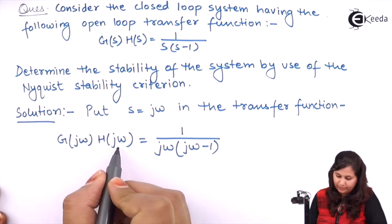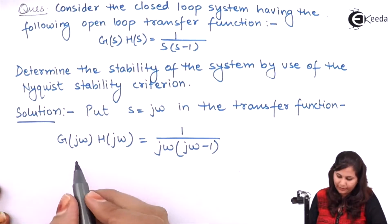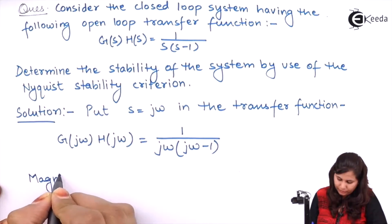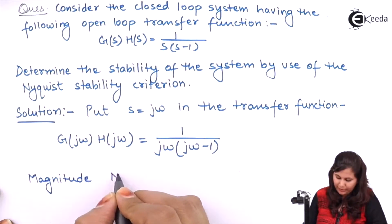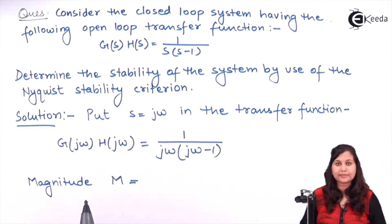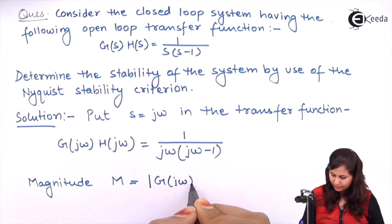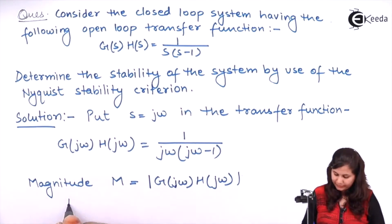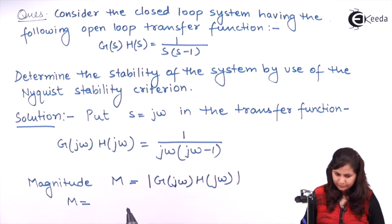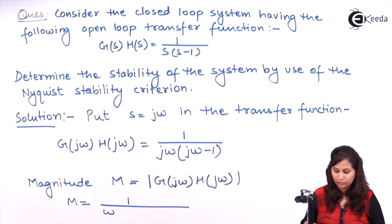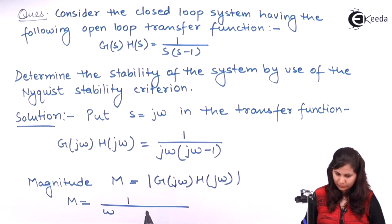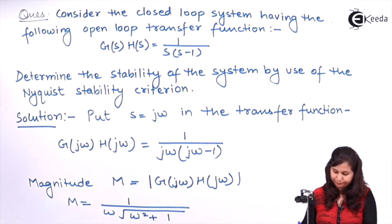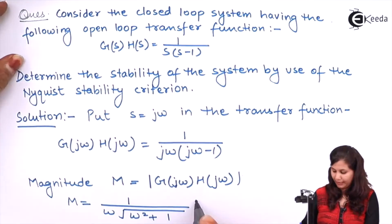Now from this frequency response, obtain the magnitude and the phase angle of G(jω)H(jω). The magnitude is represented by M and is given by |G(jω)H(jω)|. We calculate it as 1/(ω · √(ω² + 1)). This is the magnitude — mark it as equation number 1.